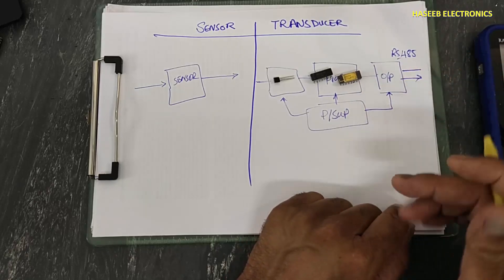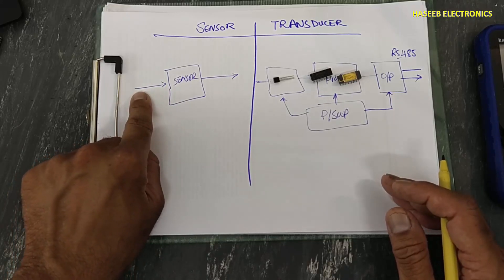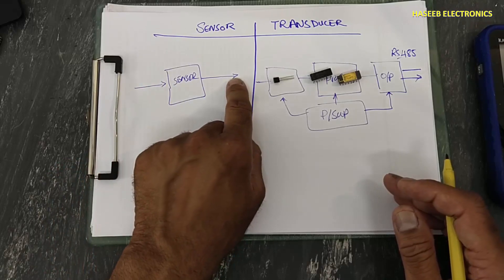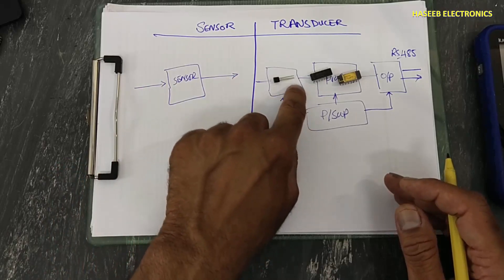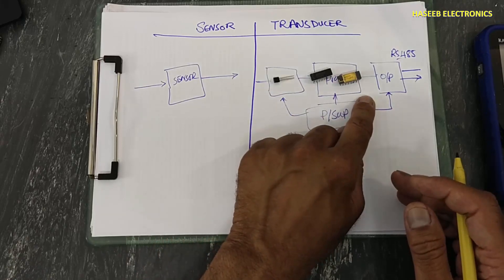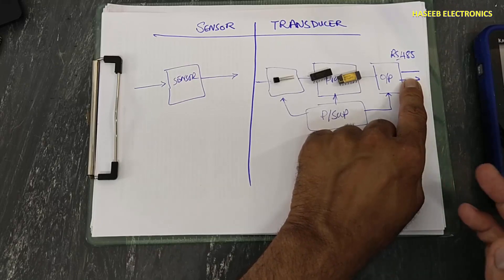Hall effect sensor - it was sensing the magnetic field, then it was giving linear output signal. But if the same signal we process through this processor and then we provide to any output circuit for further use, that will be called transducer.